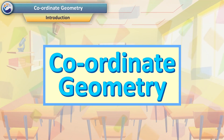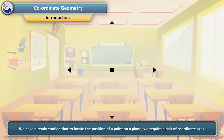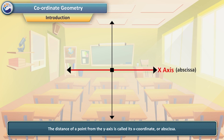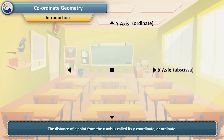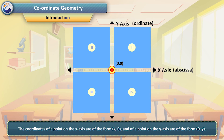Coordinate Geometry — Introduction. We have already studied that to locate the position of a point on a plane, we require a pair of coordinate axes. The distance of a point from the y-axis is called its x-coordinate or abscissa. The distance of a point from the x-axis is called its y-coordinate or ordinate. The coordinates of a point on the x-axis are of the form (x, 0), and of a point on the y-axis are of the form (0, y).